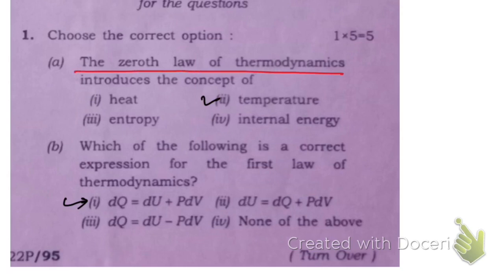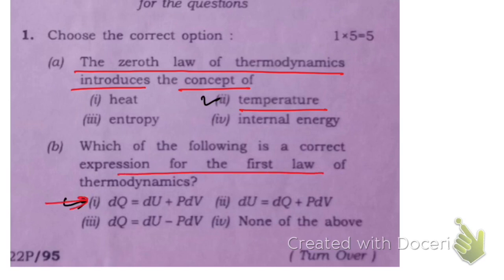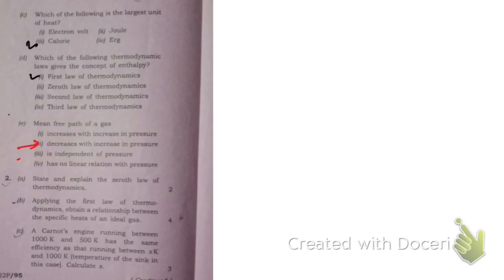First question: the zeroth law of thermodynamics introduces the concept of temperature — correct answer is temperature. Which of the following is the correct expression for the first law of thermodynamics — that is option one. Which of the following is the largest unit of heat — that is calorie. Which of the following thermodynamic laws gives the concept of enthalpy — the first law of thermodynamics. Mean free path of gas decreases with increase in pressure.